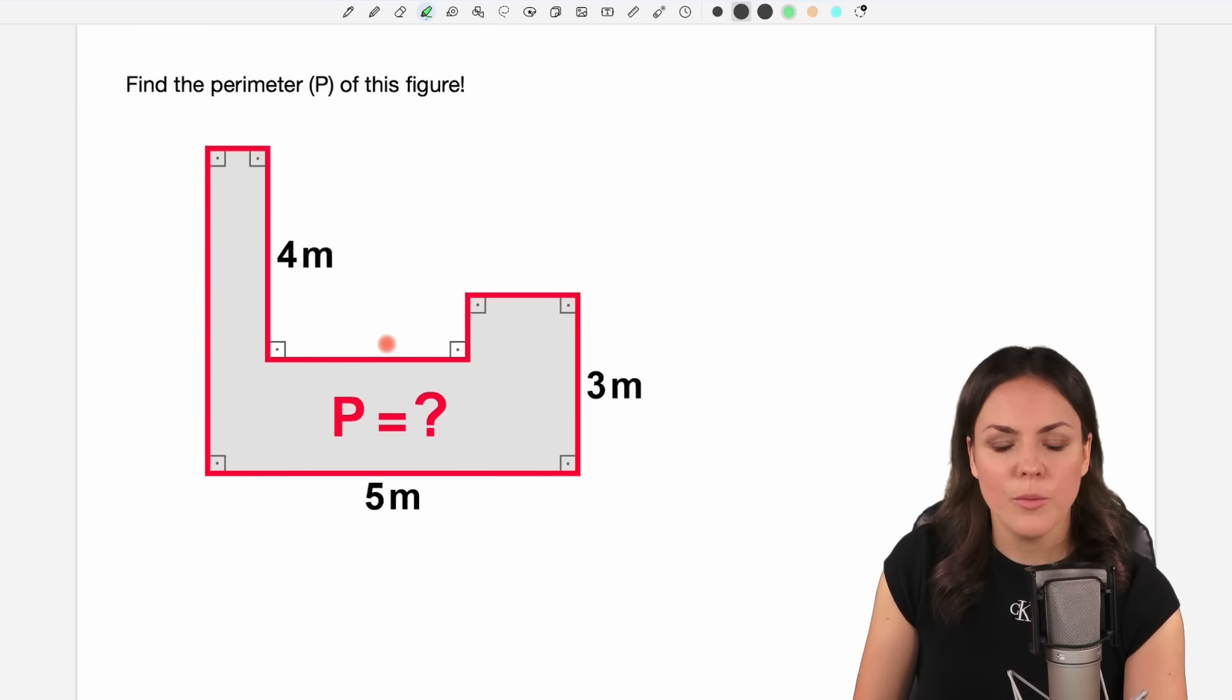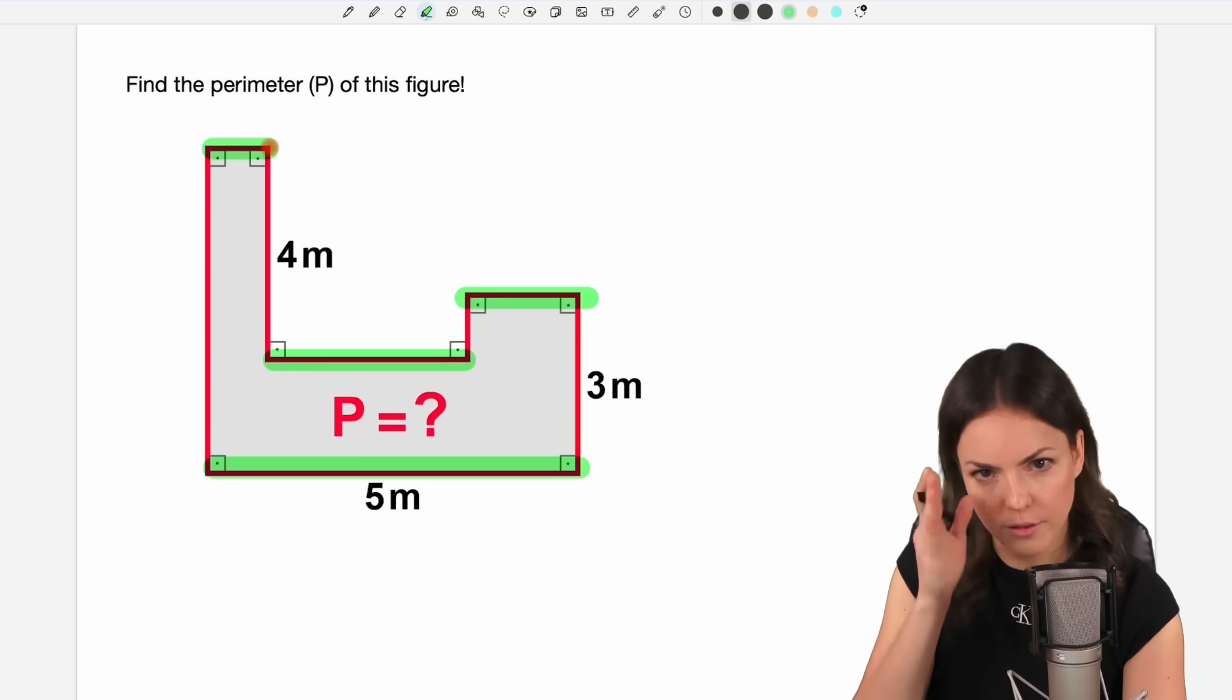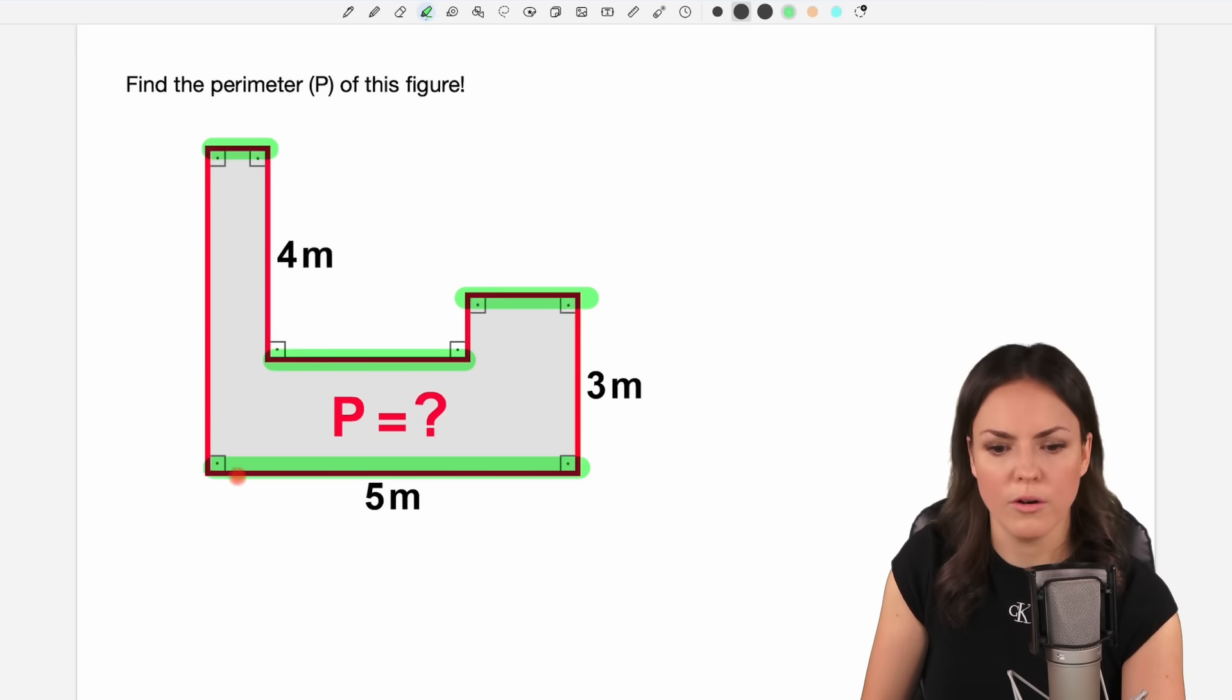I'd say we divide this problem into two parts. First part, we take a look at all the horizontal lines and after that all the vertical lines. So let's start with the horizontal ones.